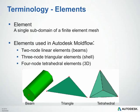We use these elements, and there are several types. One is a two-node linear element, which we see on the left — it's a beam. Another is a three-noded triangular element, also commonly called a shell or a triangle. And then a four-noded tetrahedral element, which is used in our 3D mesh type.